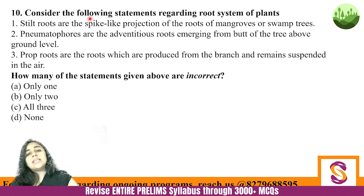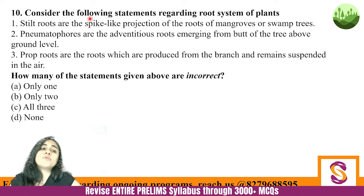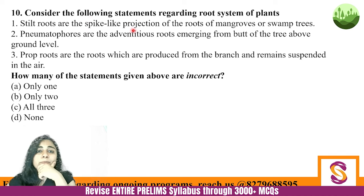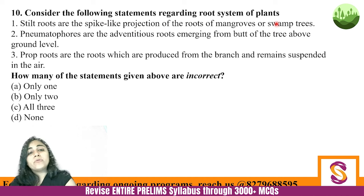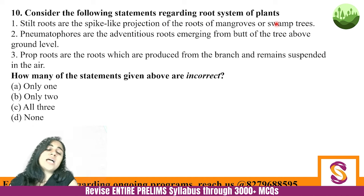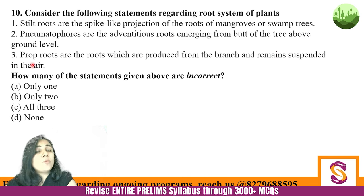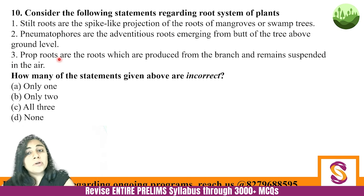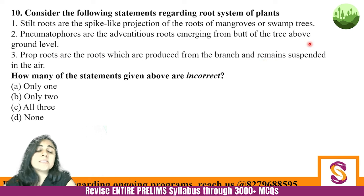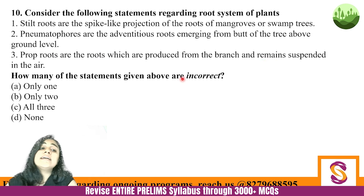Next question: Consider the following statements regarding root systems of plants. Statement one: Stilt roots are spike-like projections of the roots of mangroves or swamp trees. Statement two: Pneumatophores are the adventitious roots emerging from the butt of the tree above the ground level. Statement three: Prop roots are the roots which are produced from the branch and remain suspended in the air. How many are incorrect?